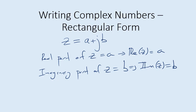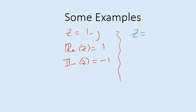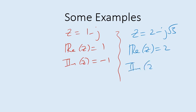A very simple example: z = 1 - j. The real part of z is just 1, and the imaginary part of z is the coefficient of j, which is -1. Let's try another: z = 2 - j√3. The real part of z is 2 and the imaginary part of z is -√3. Straightforward.